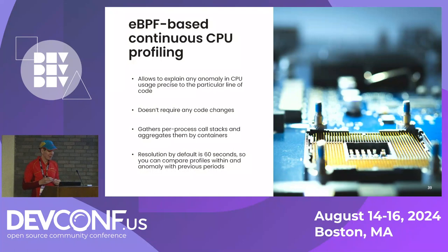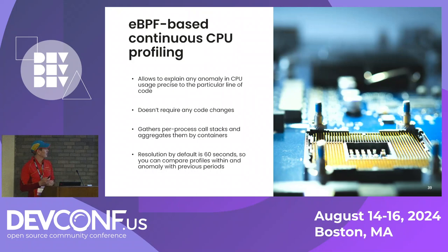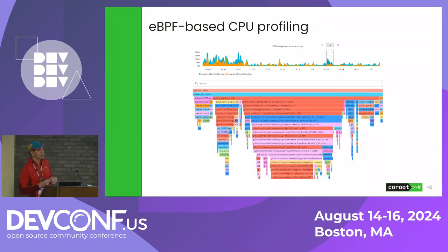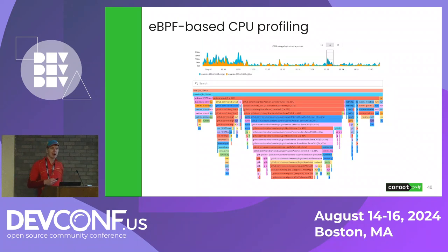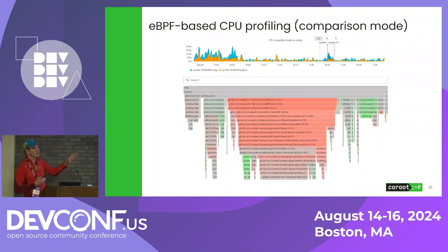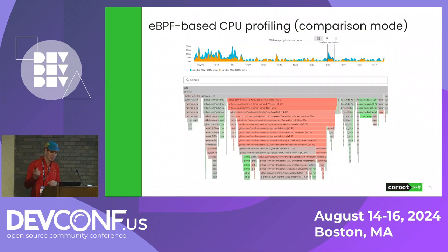What we also can do with eBPF is continuous CPU profiling — no code changes required, very low overhead. We can get something like flame charts. We can see in a given period of time exactly what the CPU consumption looks like, and what we can also do is compare different periods — a normal period versus something going wrong — and it can tell you that function usage became much more prominent.